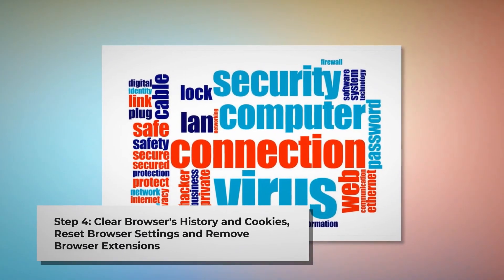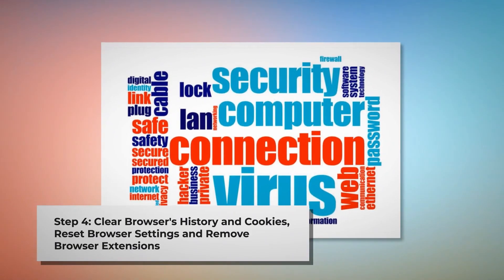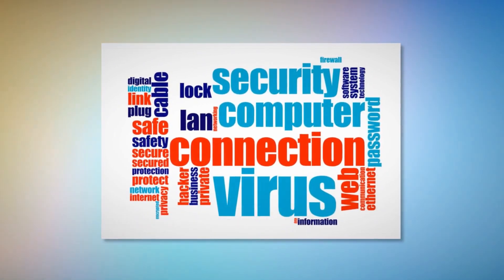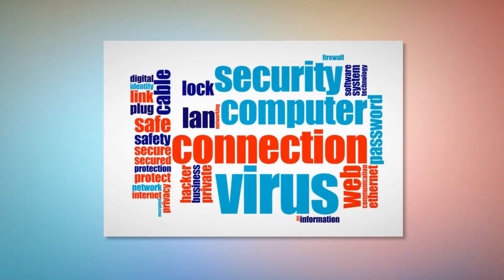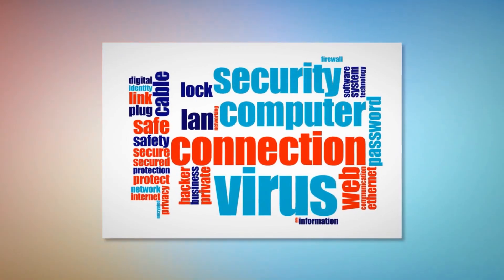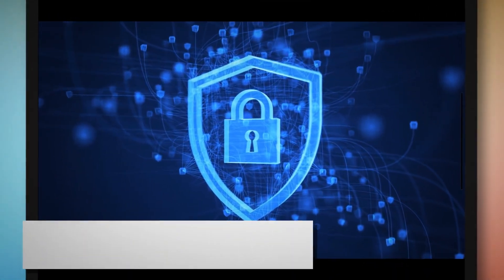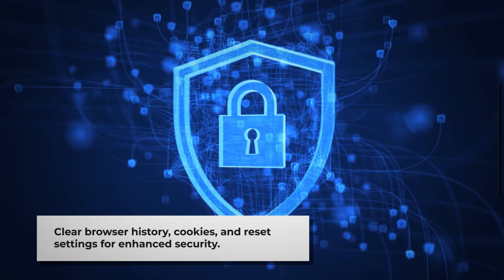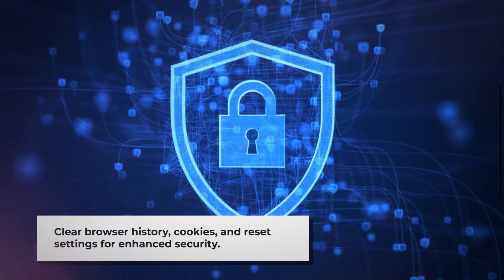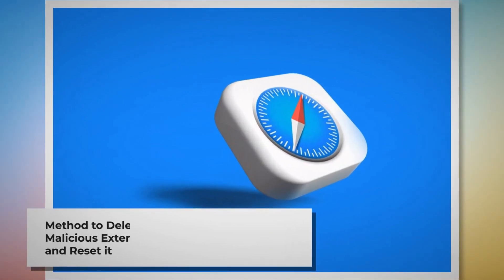Step four: Clear browser history and cookies, reset browser settings, and remove or disable unknown browser extensions. Once you delete the harmful files from step three, you should also delete malicious or unknown extensions from your browsers — Safari, Chrome, Firefox, Opera, or whichever you are using. Delete browser history and cookies, and reset your browser. Note: before you reset your browser settings, it is always a good idea to back up your bookmarks.